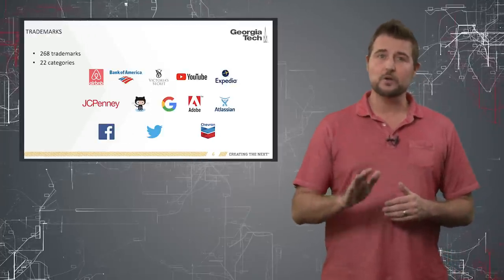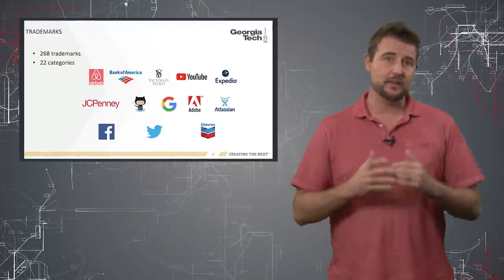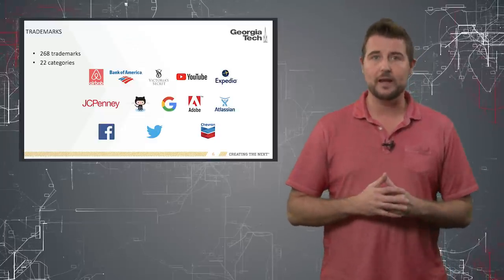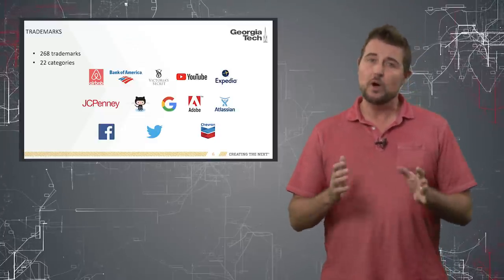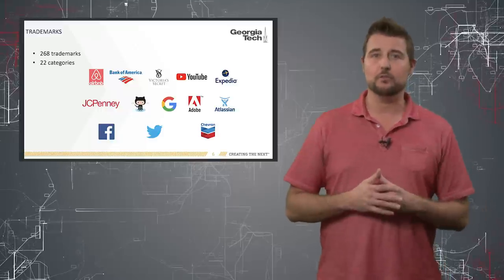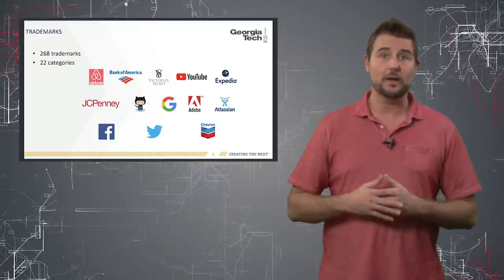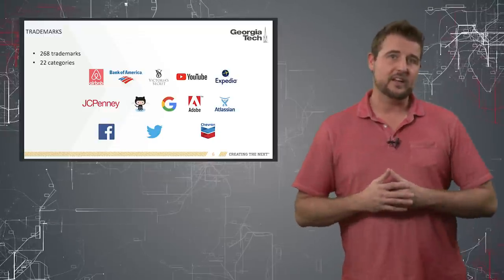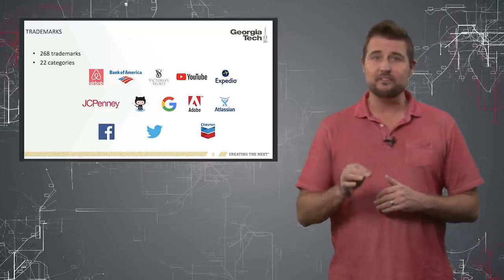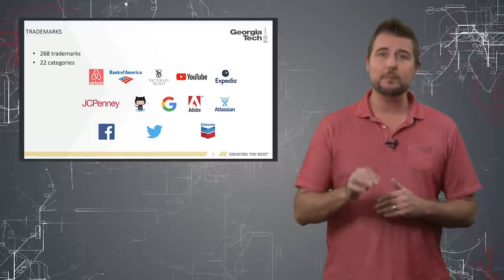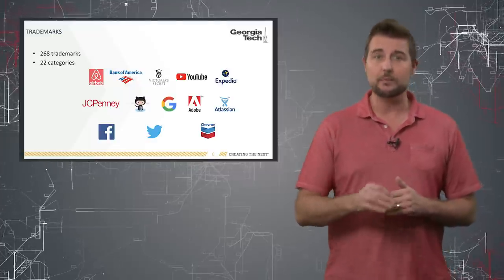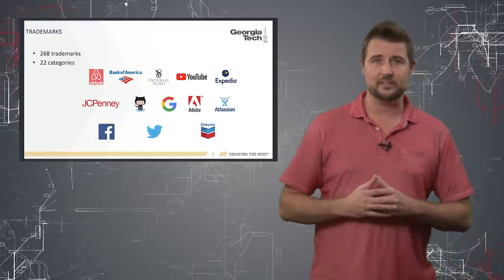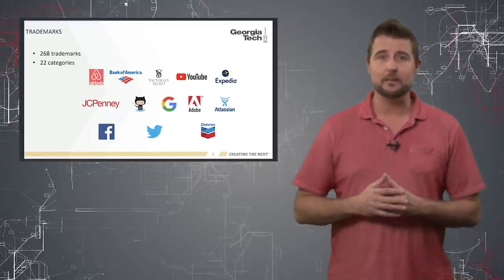These researchers started with 500 popular domain names, restricted it to trademark domain names, and came up with 268 trademark domain names that are the top domains people visit on the internet. Based on passive and active DNS records for the past six years, they found over 2.7 million combo squatting names associated only with these 268 trademark domain names.